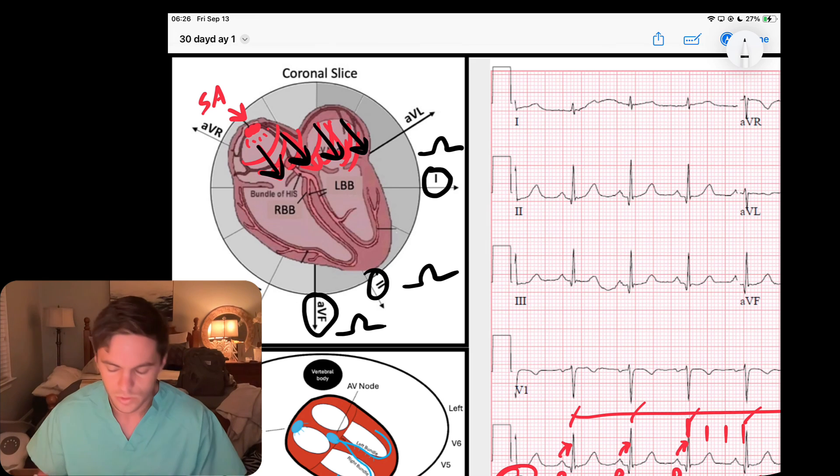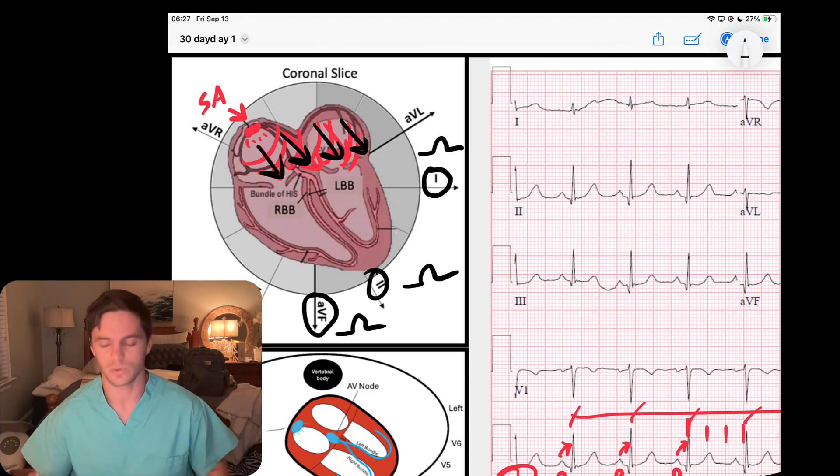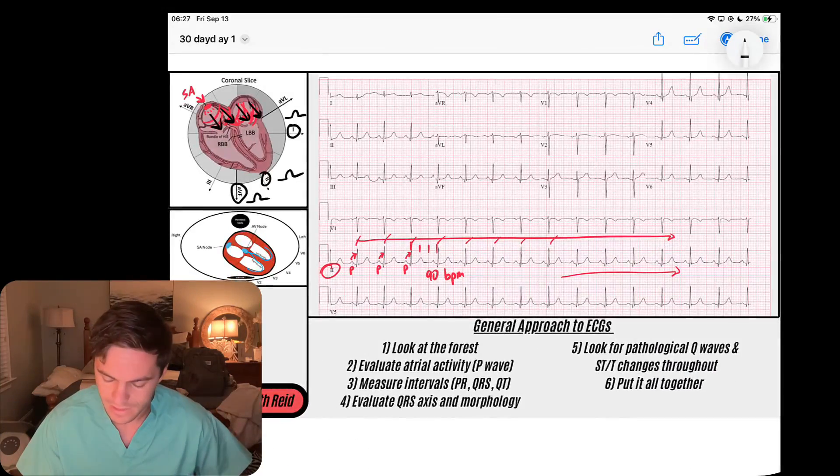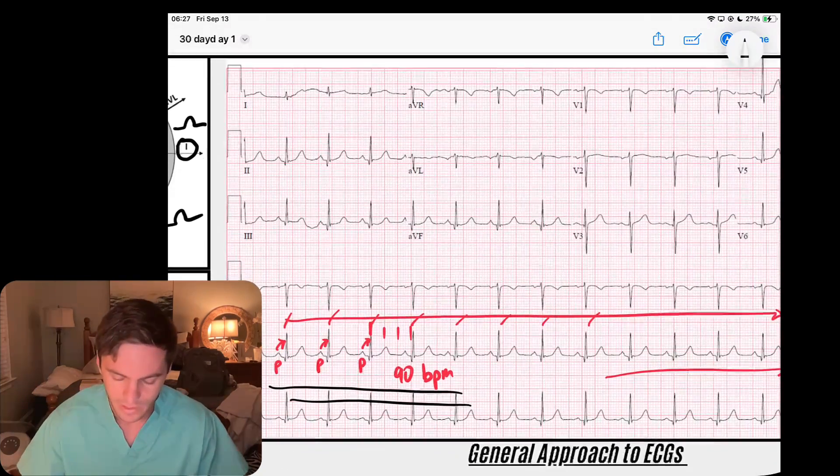We should have upright P waves in the leads heading down into the left on our coronal leads when it comes to a sinus rhythm. All of these features are features of a sinus rhythm, but we need to verify.